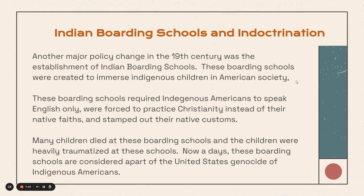Another major policy change in the 19th century was the establishment of Indian boarding schools. These boarding schools were created to immerse Indigenous children in American society. They required Indigenous Americans to speak English only, were forced to practice Christianity instead of their native faiths, and had their native customs stamped out, turning them into so-called model European citizens. Many children died at these boarding schools and the children were heavily traumatized. These boarding schools are now considered a part of the United States genocide of Indigenous Americans.